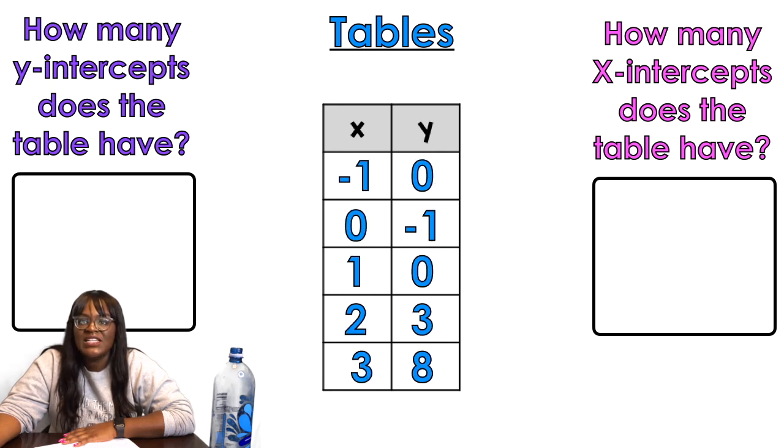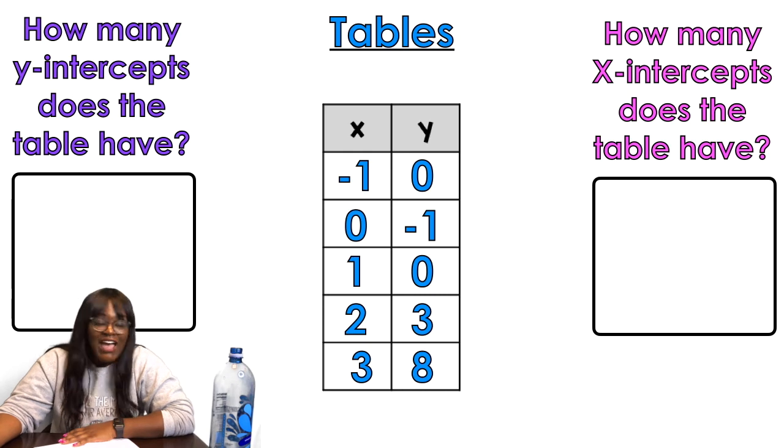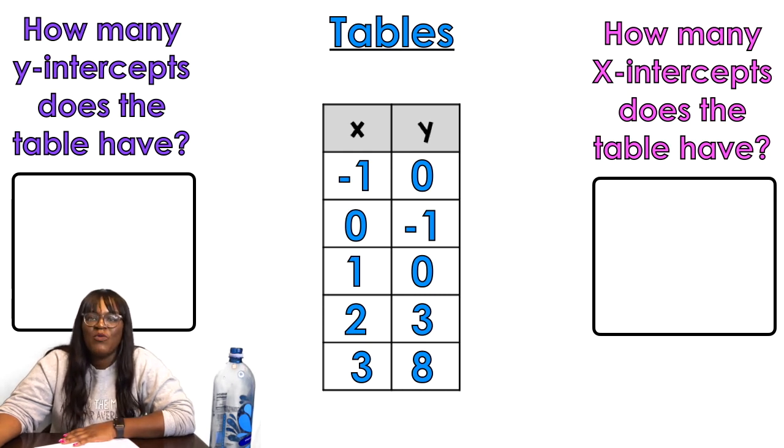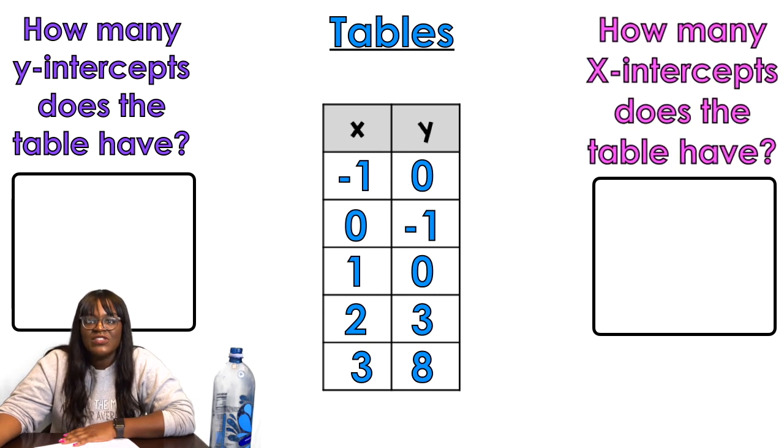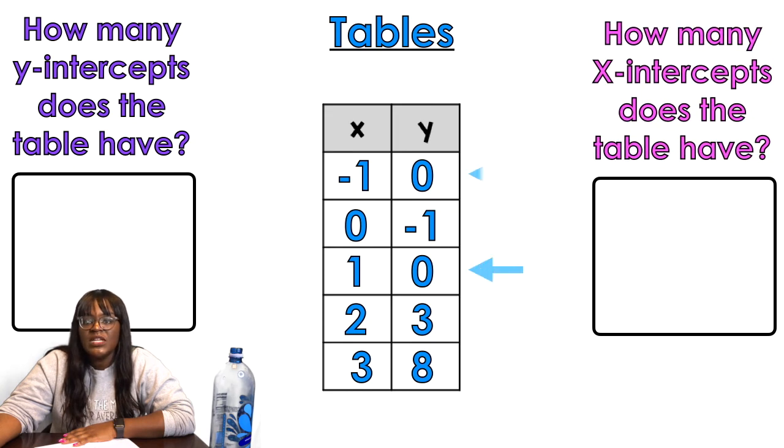Okay, slide 16 out of 18, we're almost done. X-intercepts. How many x-intercepts does the table have? This is where you look for y values that are zero. So I'm seeing one, I'm seeing another one. So that means negative one comma zero and one comma zero are both going to be x-intercepts. So those are two in total. And then how many y-intercepts does the table have? Remember, you're looking for zeros in the x column. So there's only one, so there we go.